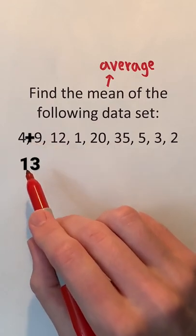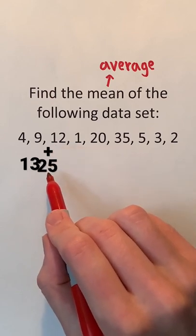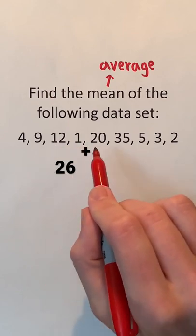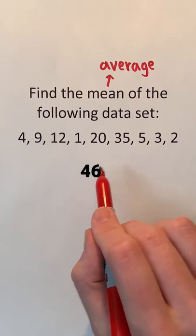4 plus 9 is 13, 13 plus 12 is 25, 25 plus 1 is 26, 26 plus 20 is 46, 46 plus 35 is 81.